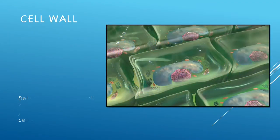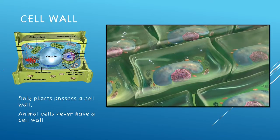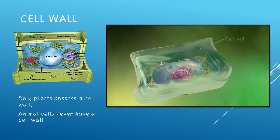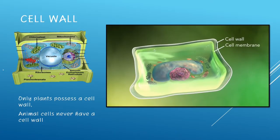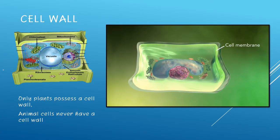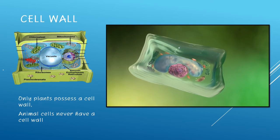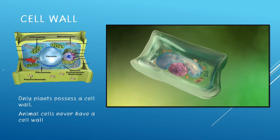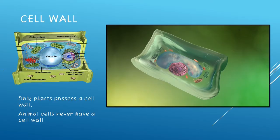The cell wall. Only plants possess a cell wall. Animal cells never have a cell wall. Plant cells are rectangular in shape due to the presence of cell walls, which can be found outside the cell membrane, which supports, shapes, and protects it.